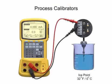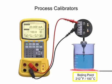To perform the measurement, the process calibrator is programmed to the specific RTD type. The accuracy is determined by measuring the temperature of water at 0 degrees Celsius and 100 degrees Celsius,